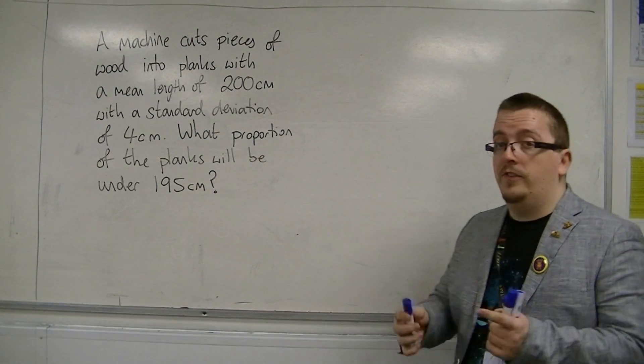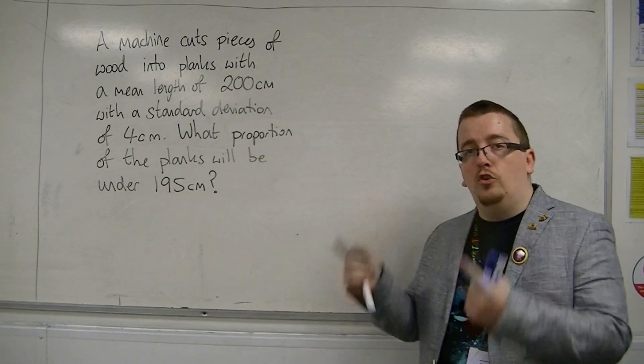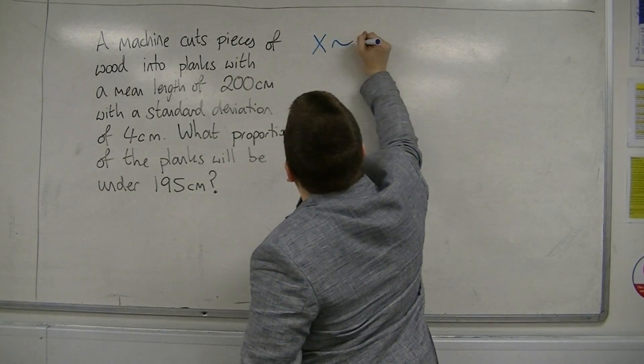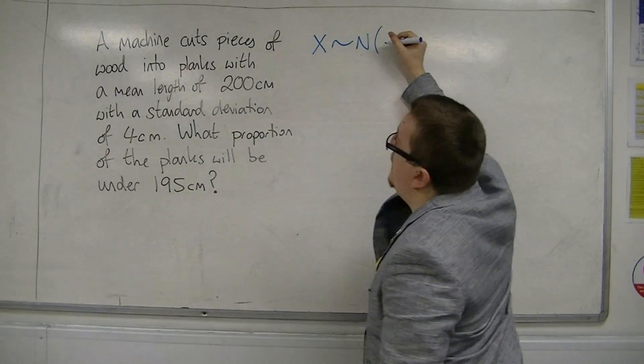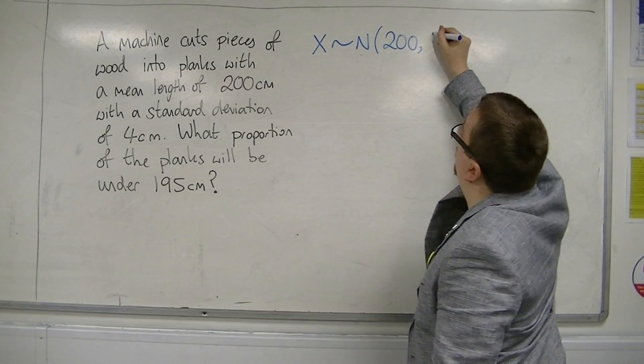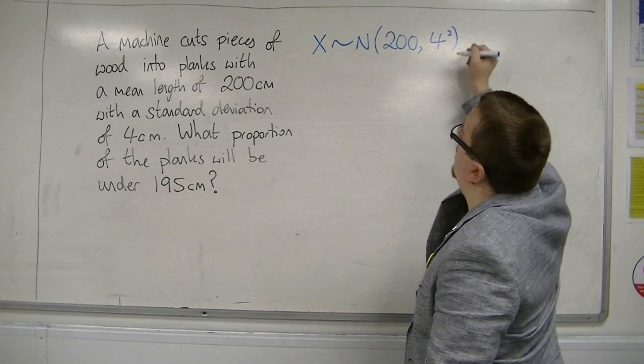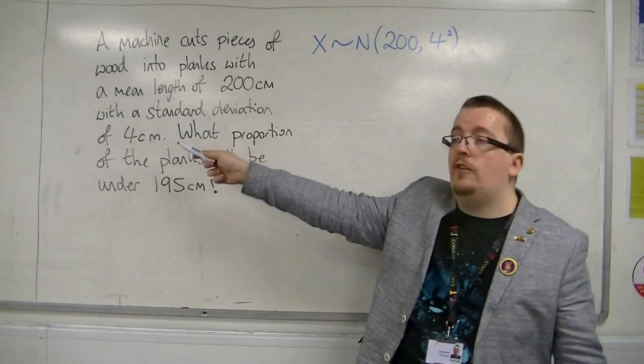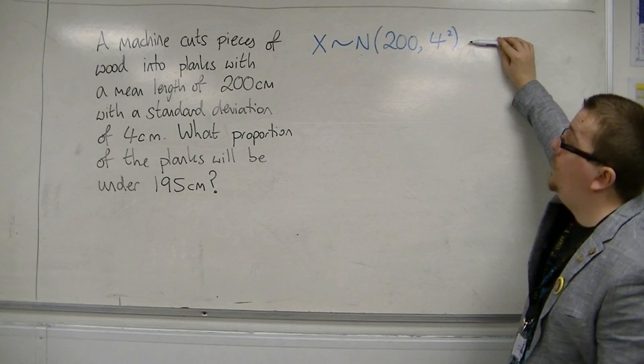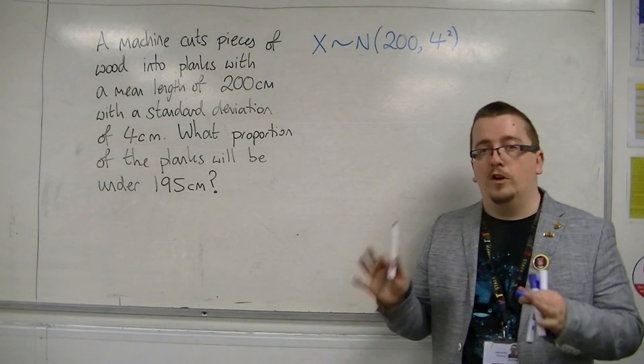The first thing that we want to do is to define the normal distribution. So X is normally distributed with a mean of 200 centimeters and a variance of 4 squared, because the standard deviation is 4, so the variance is 4 squared. And this is how we define the normal distribution that we're looking at.